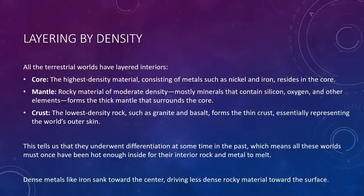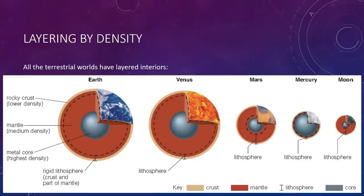Beyond that, we have the crust. This is the low-density rock region, which consists of rocks along the likes of granite and basalt—basalt is a common form of volcanic rock—that forms the thin crust, which is essentially representing the world's outer skin. This figure here is very important. It shows the layers for the five terrestrial worlds. Although not shown, Earth's metallic core actually consists of two distinct regions: a solid inner core and a molten or liquid outer core. Venus may have a similar core structure, but without seismic data, we cannot be sure.